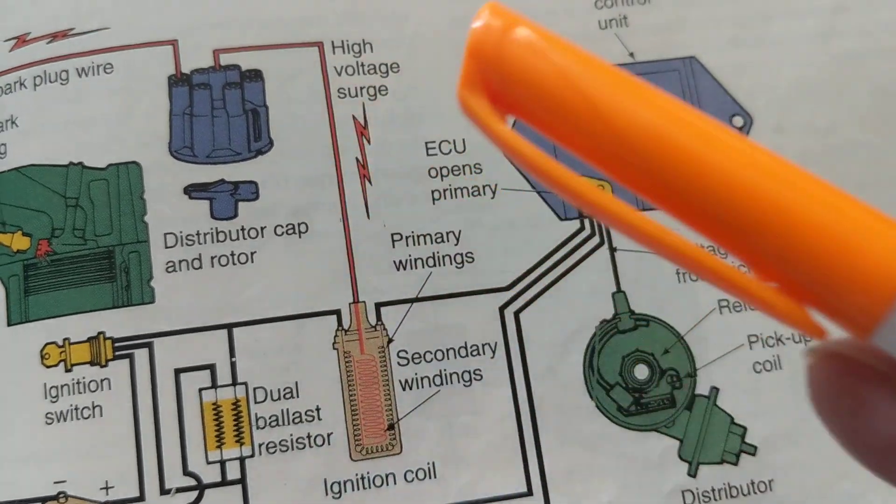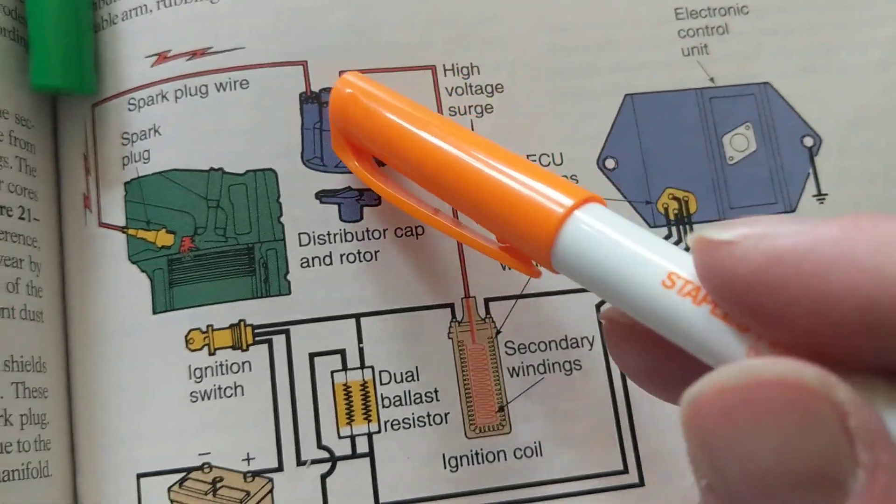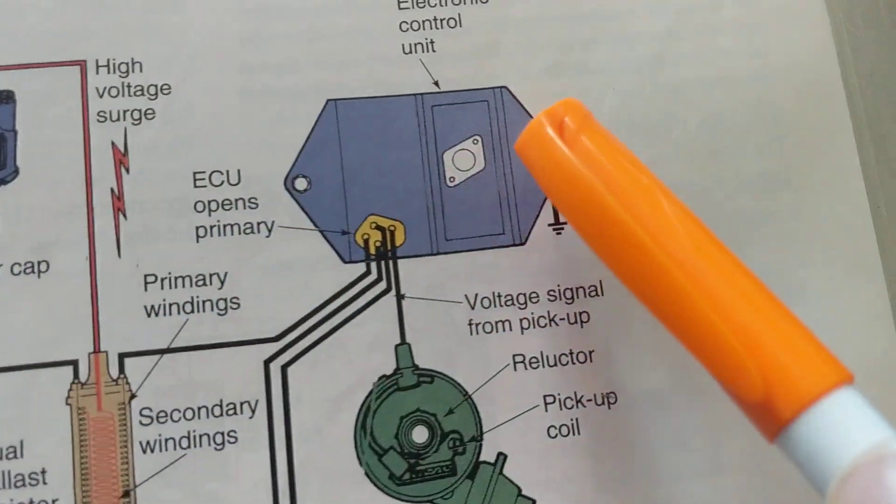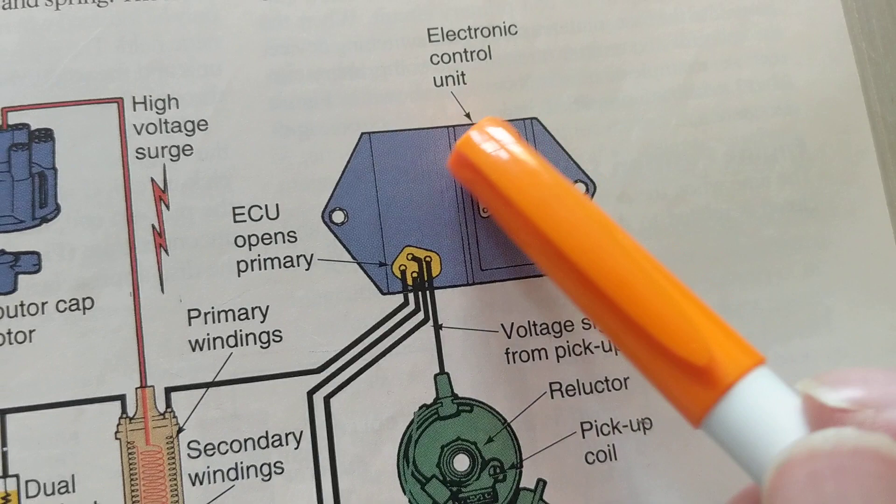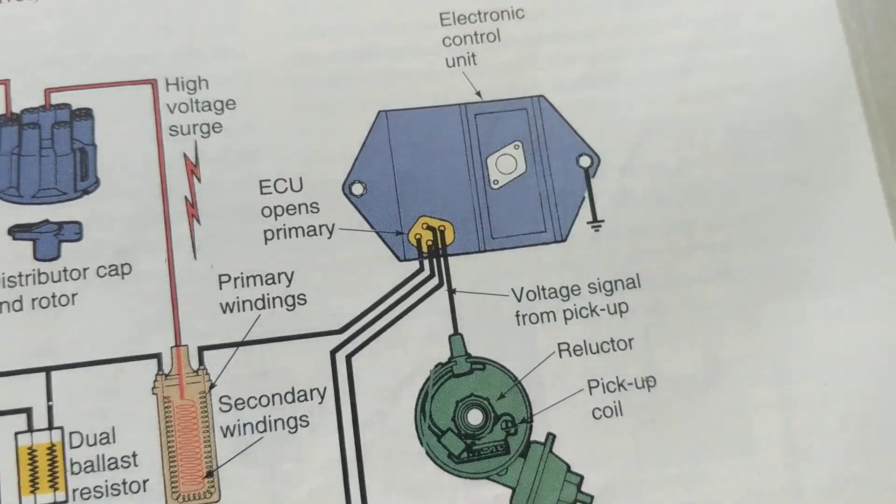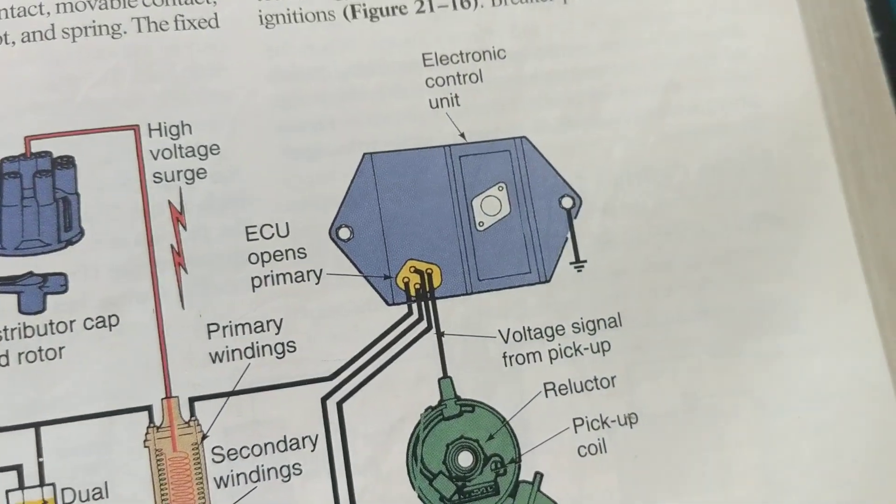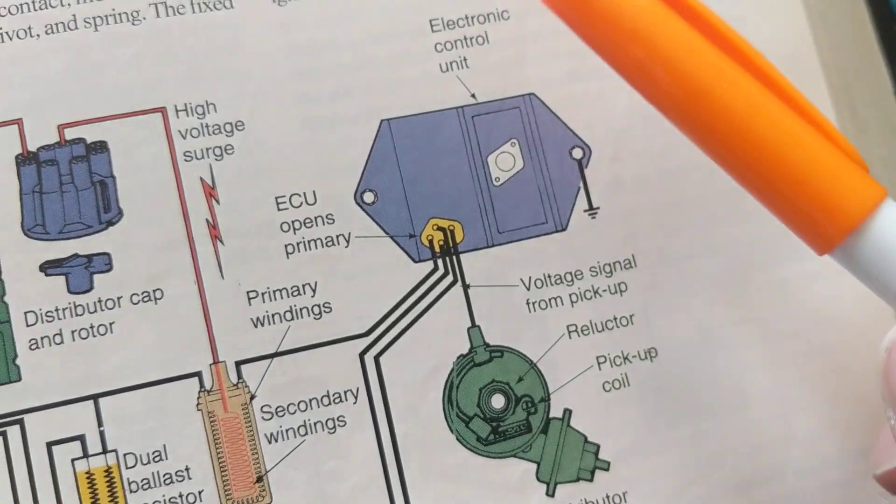When you open up this primary, it collapses the magnetic field. You get a spike, a surge, and it's transformed into the cylinder. This is the culprit.